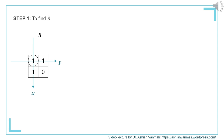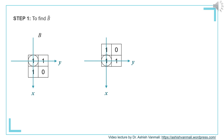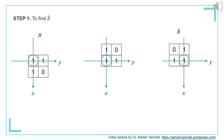We can first fold it along the Y axis and then fold it along the X axis, or do it in reverse. If we fold it along Y axis, the result is as shown in figure 2. Then we fold this result along the X axis to get B-cap. This is how the original structuring element B and its reflected version B-cap look.